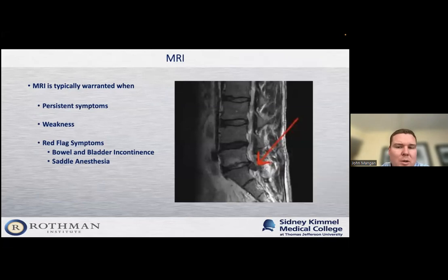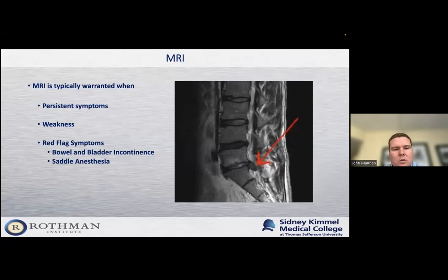For patients where we do get an MRI, these are patients with persistent symptoms who have failed conservative management, or patients who have weakness — if we're worried that a muscle group is weak in the lower extremity, that's a reason to get an MRI quicker. And then we have red flag symptoms. Patients can develop cauda equina syndrome — when there's a lot of spinal stenosis or pinching of the nerves in the low back, they can develop bowel and bladder incontinence or saddle anesthesia, meaning they can't feel their groin area. That's usually an emergent clinical picture, so those patients are sent to the hospital and get an MRI right away.